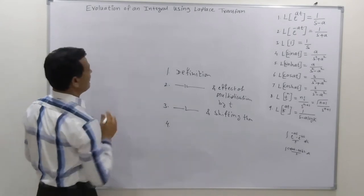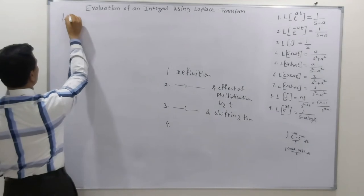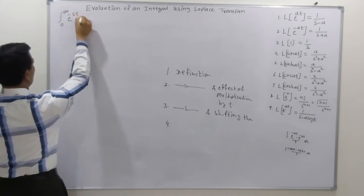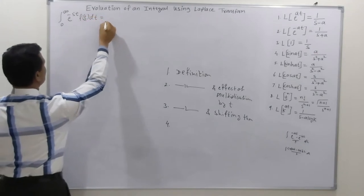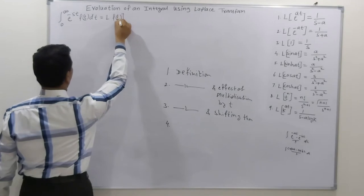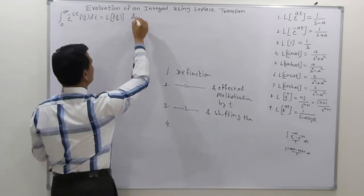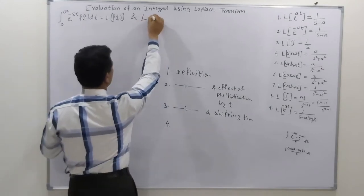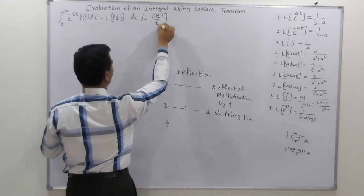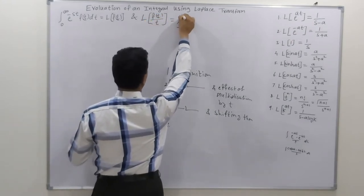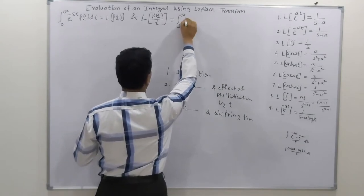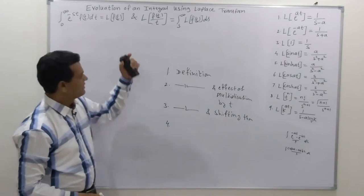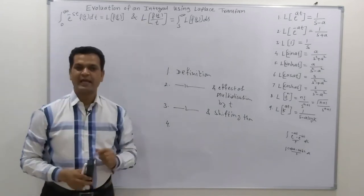Now let's write down the concept: evaluation of integral by definition of Laplace transformation. The definition is: L{f(t)} = ∫₀^∞ e^(-st) f(t) dt. We use this definition along with the effect of division by t property, which states: L{f(t)/t} = ∫ₛ^∞ L{f(t)} ds. With the help of this property we evaluate the given integrals.